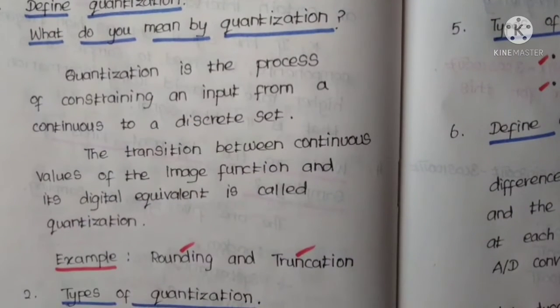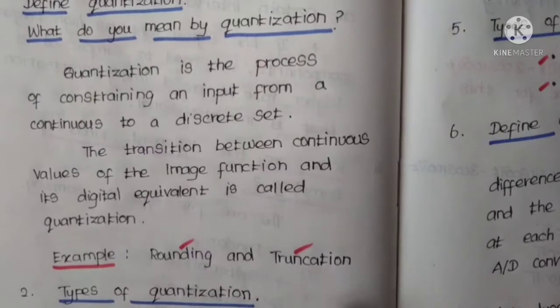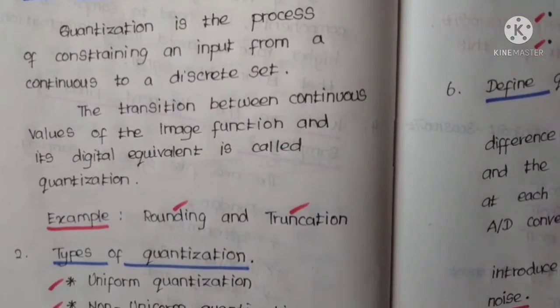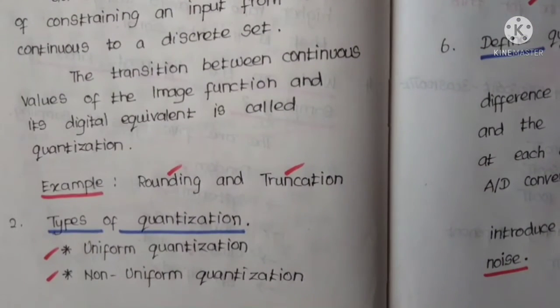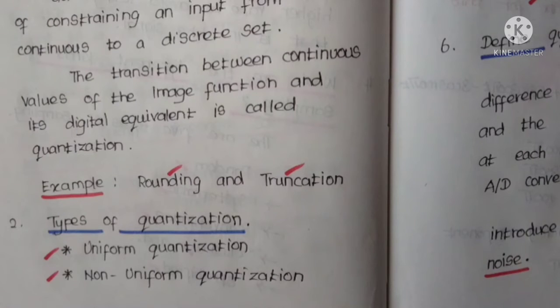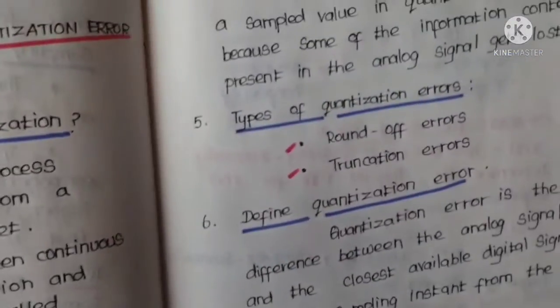Examples of quantization are rounding and truncation. There are two types of quantization: uniform quantization and non-uniform quantization.